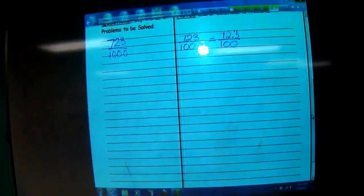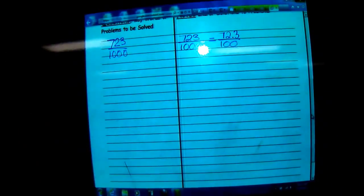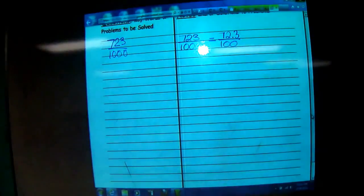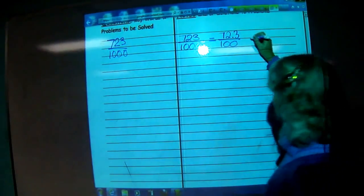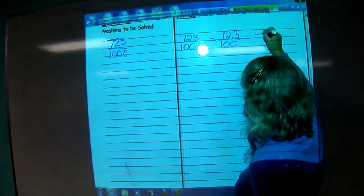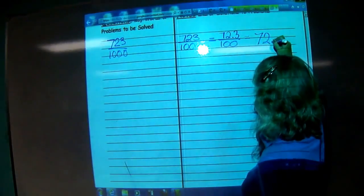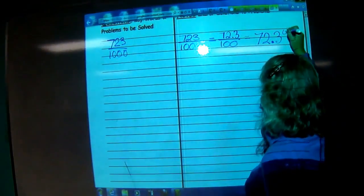Can you have a decimal in a fraction? Sure you can. You can do anything you want. You're in charge. Now that you have a numerator over 100, all you do is take it off the 100: 72.3%.